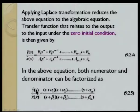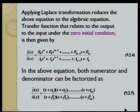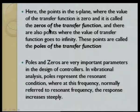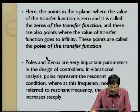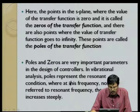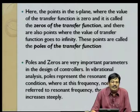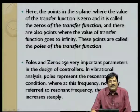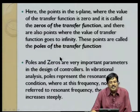The transfer function is zero at values −α₁, −α₂, −α₃, etc., and these are called zeros. The denominator is zero at −β₁, −β₂, −β₃, etc., making the transfer function infinity — these are called poles. Poles and zeros are the important parameters in control design. Poles represent the resonant condition where the driving frequency equals the natural frequency, which can enormously increase the displacement or vibrational amplitude — something to be avoided at any cost.